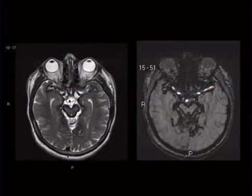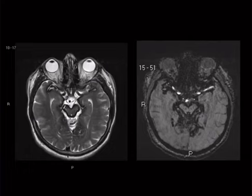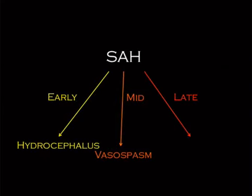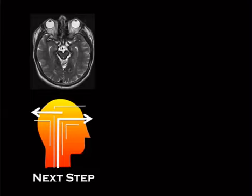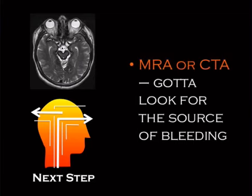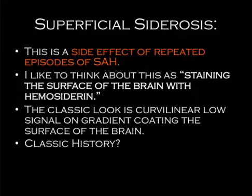The late complication of subarachnoid hemorrhage: we've got some low signal coating the outside of the brain that is blooming on susceptibility — this is superficial siderosis. In a classic multiple-choice scenario, they show you superficial siderosis with no history and ask for the next step. You need to recognize it occurs because of bleeding and get a CTA or MRA to look for the source. Some references say you also need spine imaging.